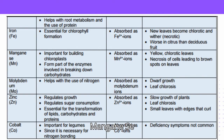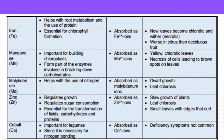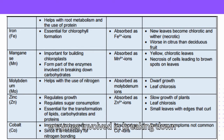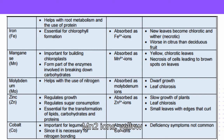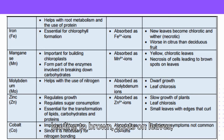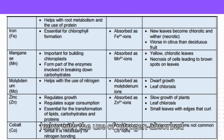Manganese (Mn): Important for building chloroplasts and forms part of the enzymes involved in breaking down carbohydrates. Absorbed as Mn²⁺ ions. Deficiency symptoms: yellow chlorotic leaves and necrosis of cells leading to brown spots on leaves.